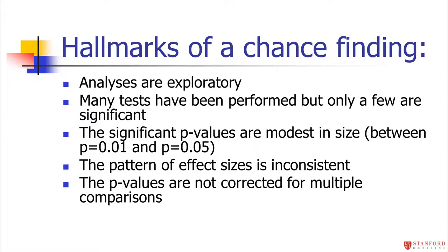When deciding if something is a chance finding, look for: running lots of tests with only a few popping up significant — that's consistent with chance. Look for p-values that are modest in size (0.01, 0.02, 0.05) rather than extremely small like 1 in 10,000. An inconsistent pattern of effect sizes also indicates chance. Also check whether the p-values have been corrected for multiple comparisons. If they haven't, you need to worry about chance findings.